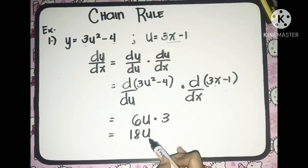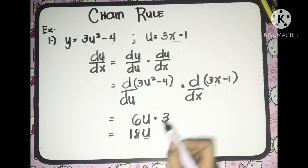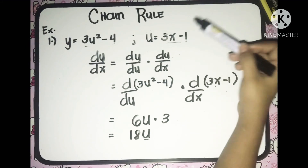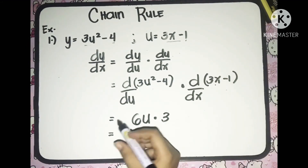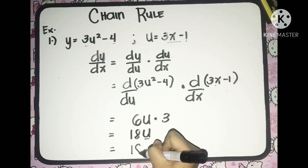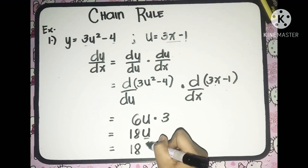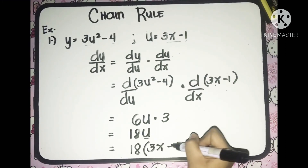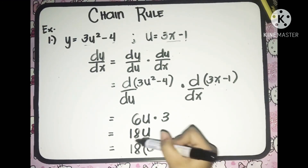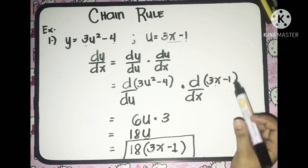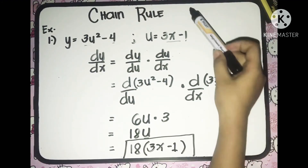After we got this, we will substitute the value of u. So u is equal to 3x minus 1, so we substitute that in. We'll have 18 multiplied to 3x minus 1. And that is the derivative of the given function by using chain rule.